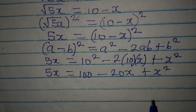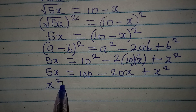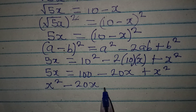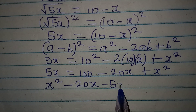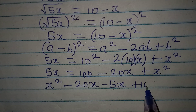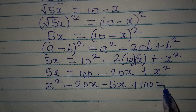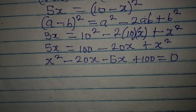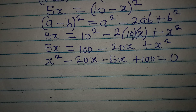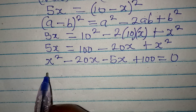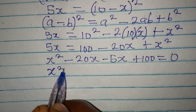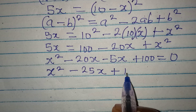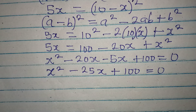So we have 5x equal to 100 minus 20x plus x squared. Let's arrange this better. We have x squared, then minus 20x, and the negative 5x turns into minus 25x, plus 100, and the whole of this equals zero because we move everything to the same side.